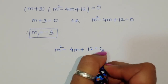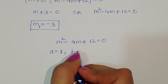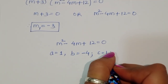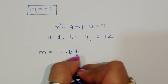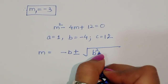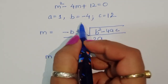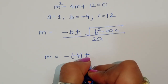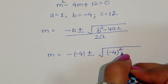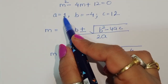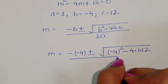For the second equation, m squared minus 4m plus 12 equals 0, the coefficients are: a equals 1, b equals minus 4, and c equals 12. We use the quadratic formula: m equals negative b plus or minus the square root of b squared minus 4ac, all divided by 2a.